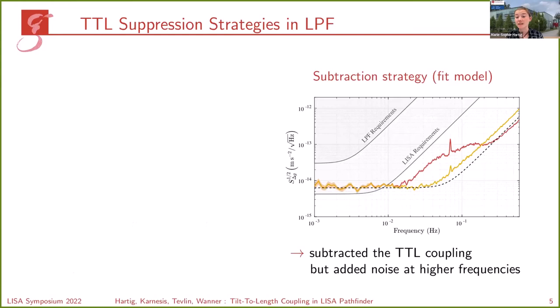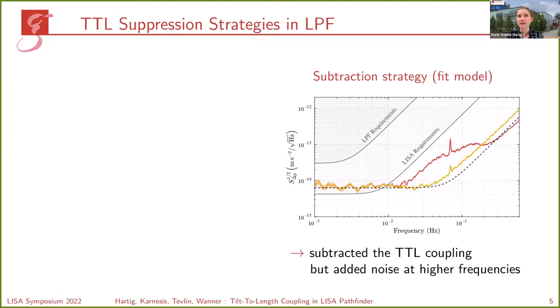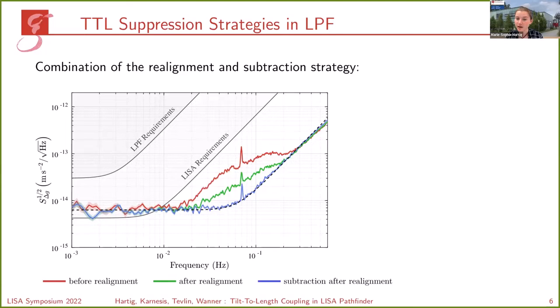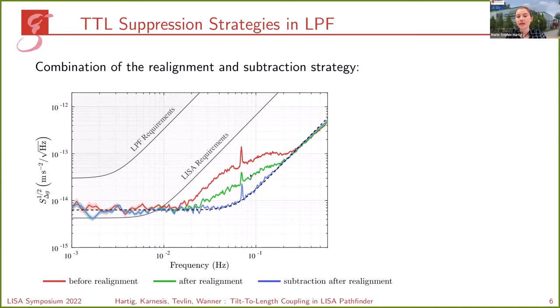However, there was still significant noise remaining. Therefore there was a second strategy: a subtraction strategy. The noise was fitted and the fit model was then subtracted from the measurement. You can see in the plot: in red the pre-engineering noise, and in yellow the noise remaining after the subtraction. You find higher noise at higher frequencies since the noise from the fitting quantities was added due to the subtraction of the fit. Both methods alone are not sufficient, so during the mission they were combined. The test masses were realigned first, yielding the green curve, and then the subtraction method was applied to the residual noise, yielding the blue curve.